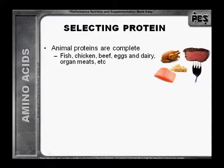Animal proteins are complete — things like fish, chicken, beef, eggs, dairy, organ meats, etc.